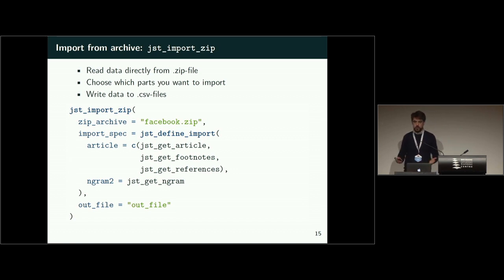The arguments are like this. So the first one is simply the path to the zip archive, and with the second one we can specify which content we want. Here we only want the articles. We saw beforehand that there are books as well, but we don't care about them. And we can get for all of the articles, main content, footnotes, and references. And in this case we also want to get the n-grams. And the out_file is simply the first part of the file which will then be written to your disk.